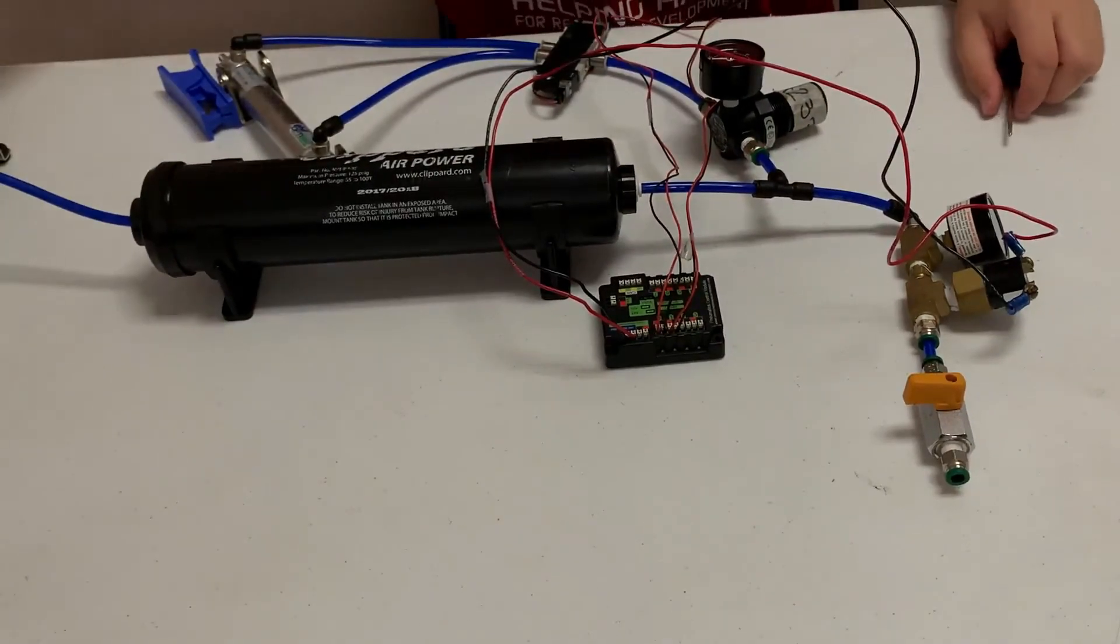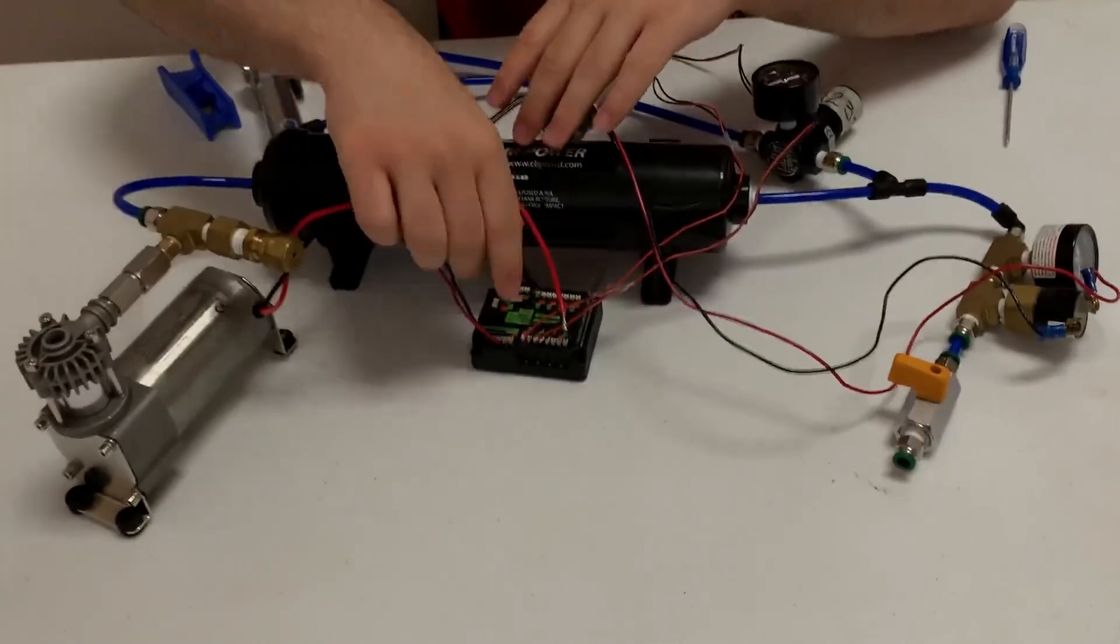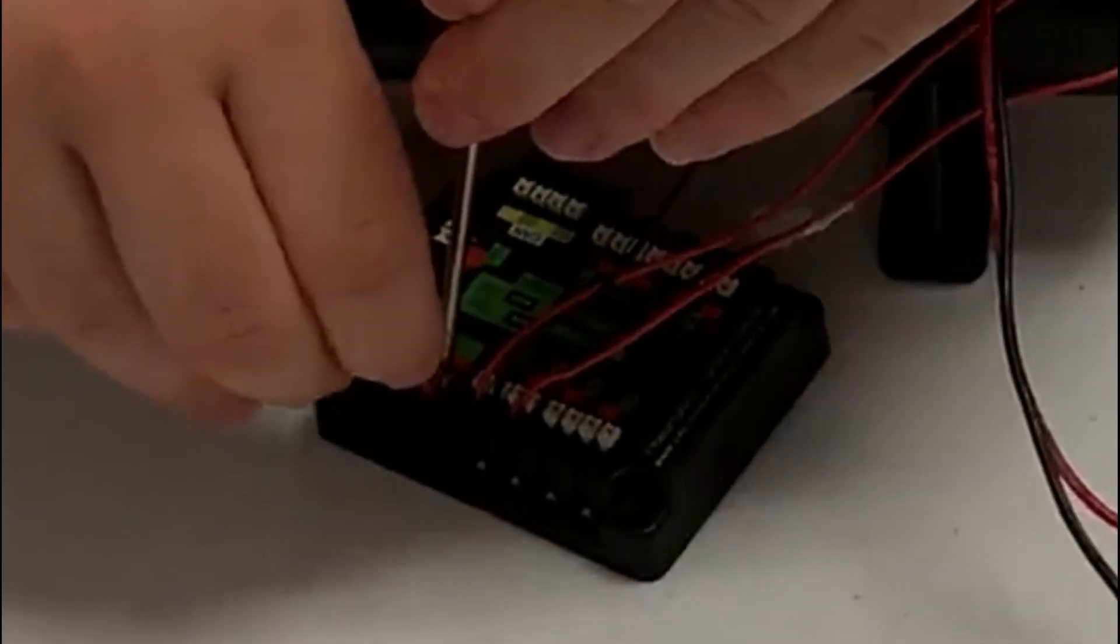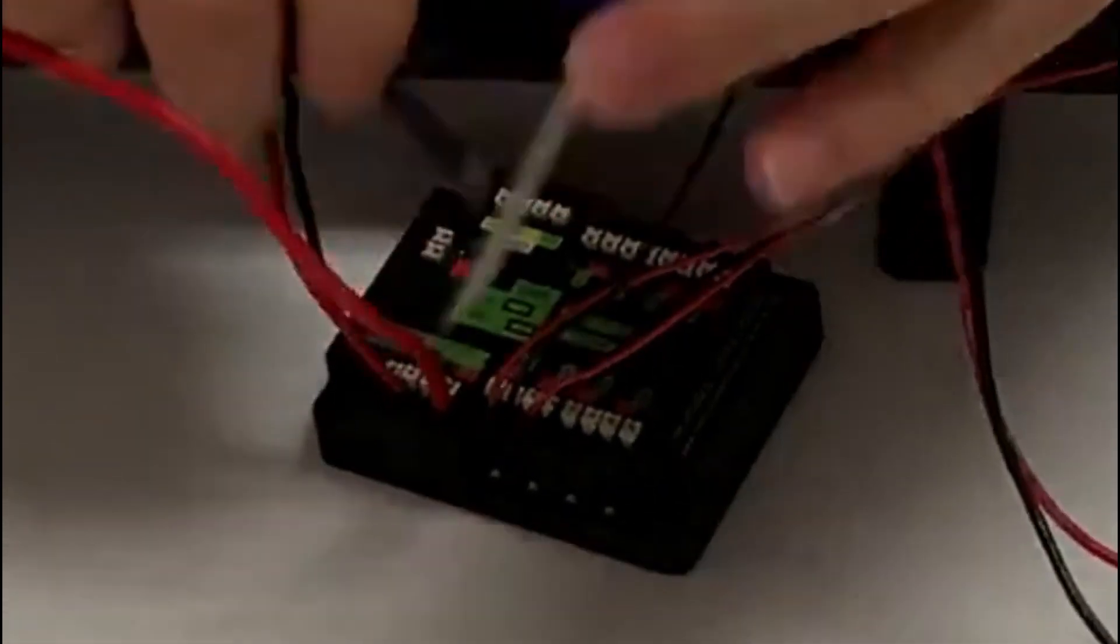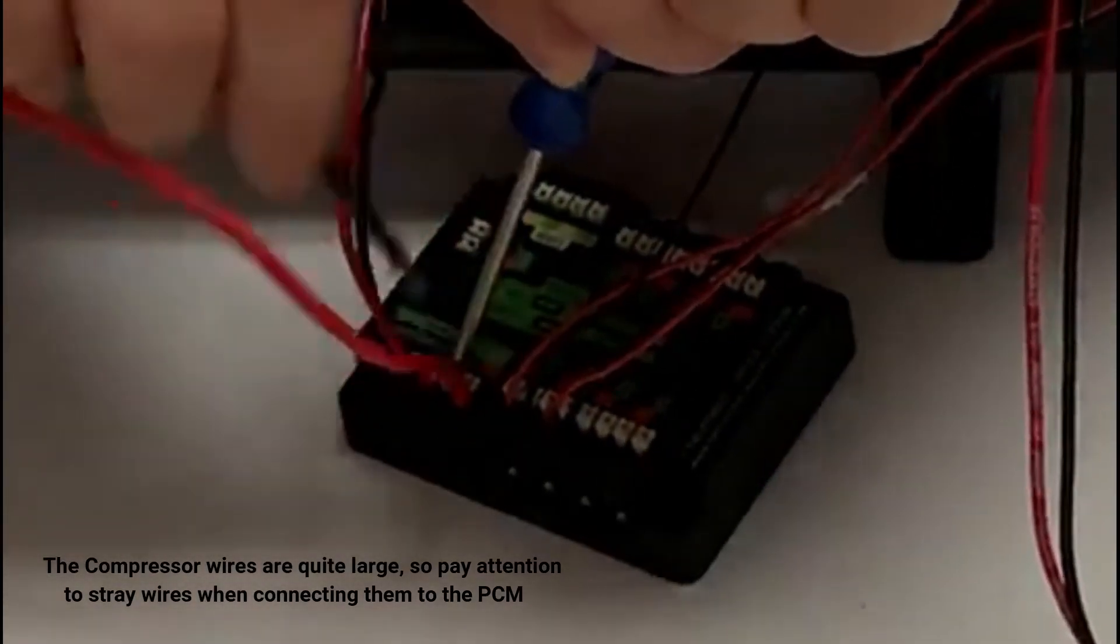And then lastly, we're going to take our compressor and we are going to connect our compressor to where it says compressor out. The reason we connect it here and not the power distribution board is because in the pneumatics control module, it will be able to turn on and off the compressor in order to maintain a proper pressure in the entire system. Whenever the pressure drops too low, as detected by the electronic switch, it will then turn on the compressor in order to replenish the lost compressed air.